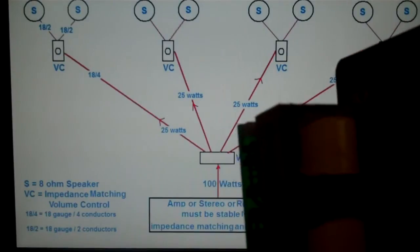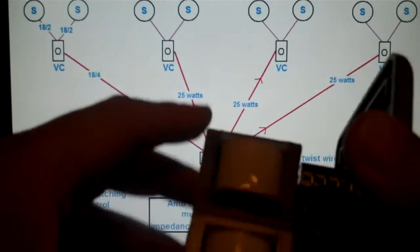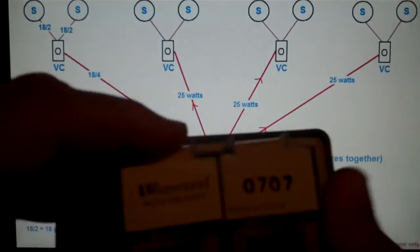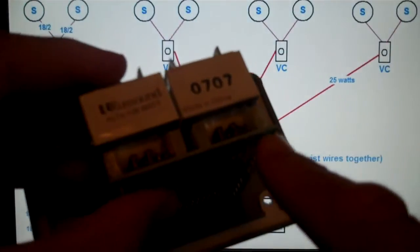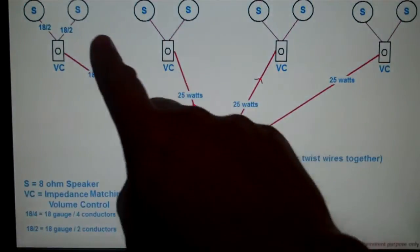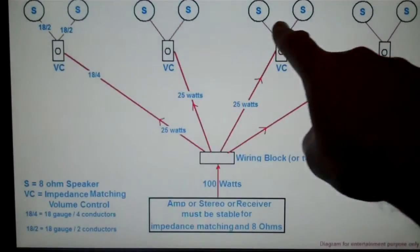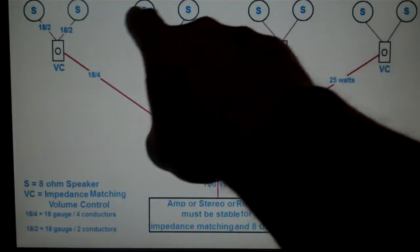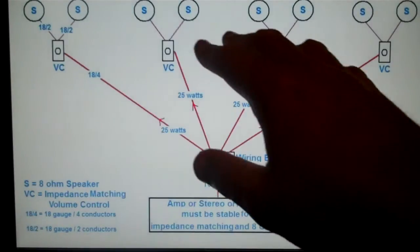Now, most impedance matching volume controls, if not all, have jumper switch settings here. And these are set based on the number of speakers that you have. In this particular diagram, we have a total of eight speakers, or four pair.